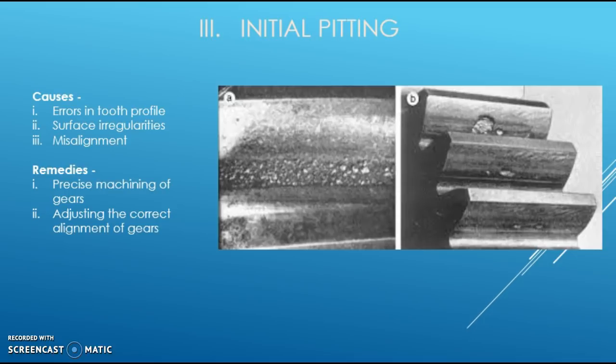The next type is initial pitting, also called corrective pitting, which is a localized phenomenon characterized by small pits at high spots. Such high spots are progressively worn out and the load is redistributed. Initial pitting is caused by errors in manufacturing, such as errors in tooth profile, surface irregularities, and misalignment, which may induce dynamic loads. It can be avoided by precise machining of gears, adjusting correct alignment so that the load is uniformly distributed across the full face width, and reducing dynamic loads.